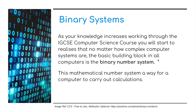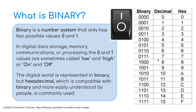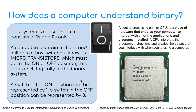This mathematical number system is a way for a computer to carry out calculations. Binary is a number system that only has two possible values: 0 and 1. In digital data storage, memory, communications, or processing, the 0 and 1 values are sometimes called low and high, or on and off. A computer contains millions, trillions of tiny switches known as microtransistors, which must be in either an on or an off position. This lends itself logically to the binary system.